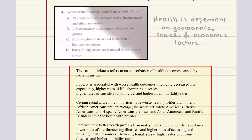Let's move on to problem four, which asks: which of the following trends is most likely false? A says mortality rates are increased in low income racial and ethnic minorities. B says life expectancy is decreased in high income groups. C says birth weights are decreased in children of low income women. And D says rates of lung cancer are increased in low income groups. The statement most likely false is going to be B — life expectancy is decreased in high income groups. This is not true. High income groups tend to have increased life expectancy rates, not decreased.